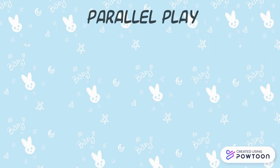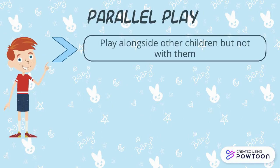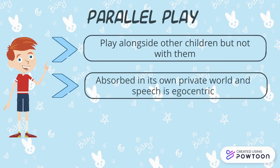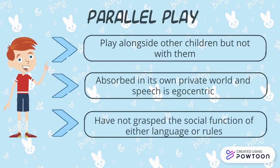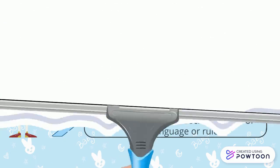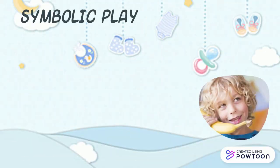The third key feature of the pre-operational stage is Parallel Play. In this stage, children often play alongside other children but not with them. Each child is absorbed in its own private world and speech is egocentric. The pre-operational child has not yet grasped the social function of either language or rules.